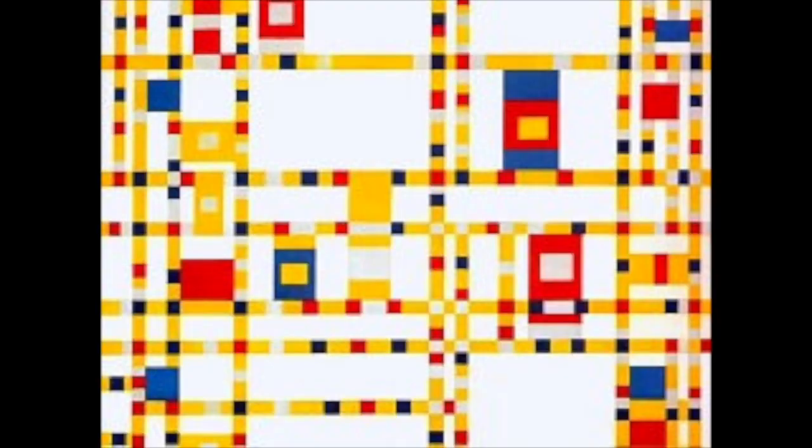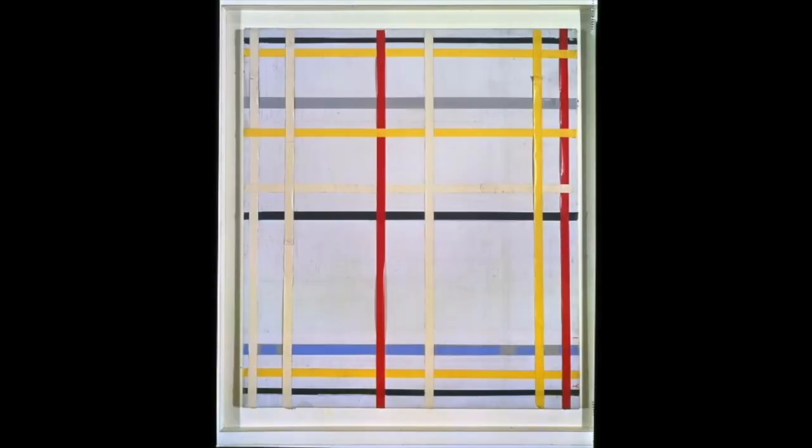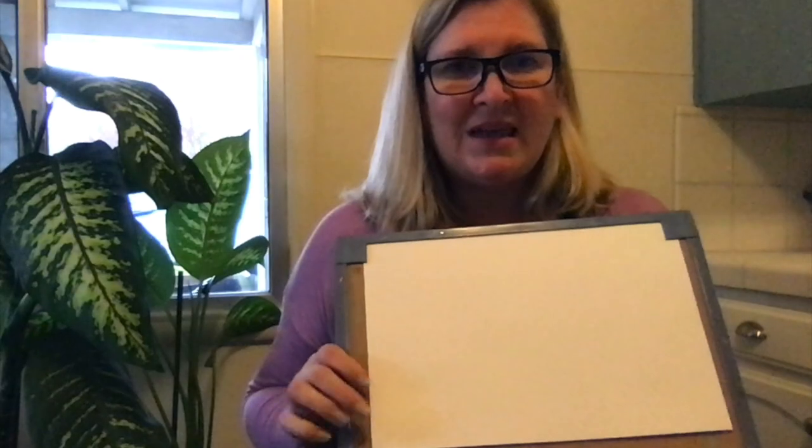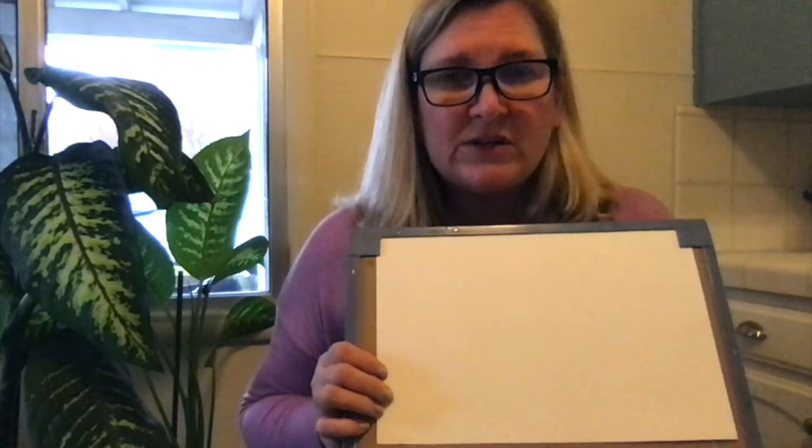Now, if you're wondering where you can find a Piet Mondrian actual work of art, you can see Broadway Boogie Woogie at the Museum of Modern Art in New York City, but you don't have to go that far because right here in the Bay Area there's a Mondrian at the San Francisco Museum of Modern Art. It's called Unfinished New York City Two. Okay, so here's how we're going to do our project.